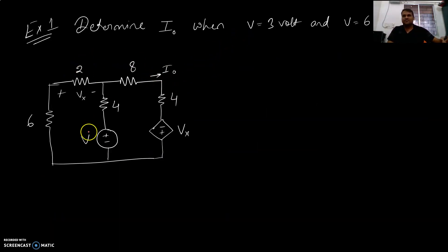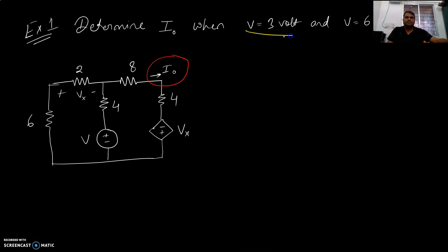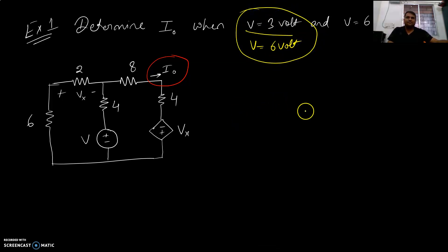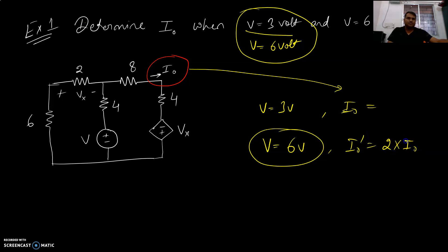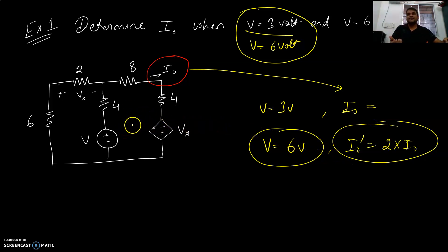Let us take an example where we have a voltage and a dependent voltage source, and our objective is to find the current i0. The input voltage v equals 3 volts, and another voltage is 6 volts. We will see that if we give v equal to 3 volts, what is the current i0 we get? And if we have v equal to 6 volts, what is the current? If this is doubled, we need to verify the output also doubles to satisfy linearity, and our confidence level will rise.